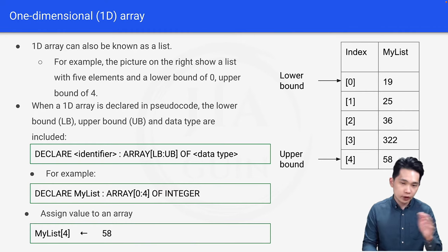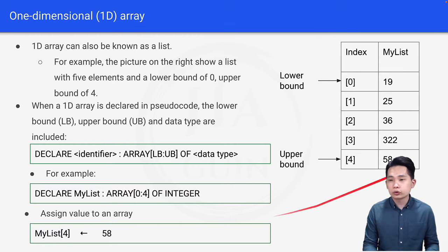Therefore, for this example, we have to put MyList[0] ← 19, MyList[1] ← 25, and so on, in order to produce this array.